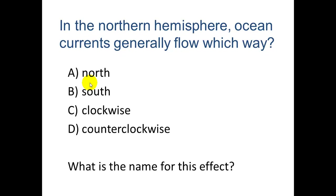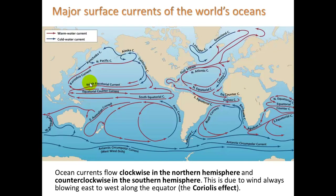What is the name for this effect? It's called the Coriolis effect. You'll see that along the equator — the equator goes right along the middle — all ocean currents are generally going from east to west. And so that creates circulation patterns that go clockwise in the north and counterclockwise in the south for consistency.